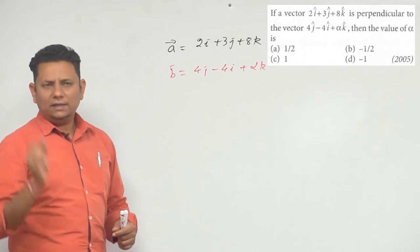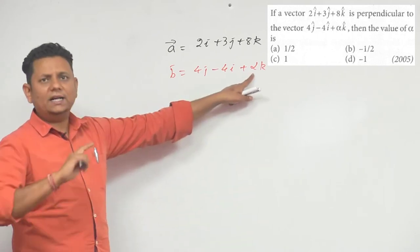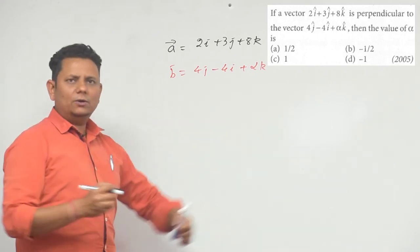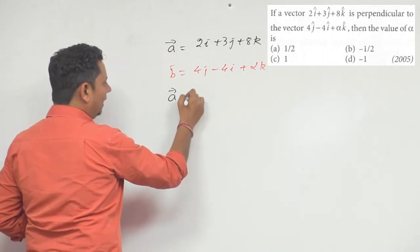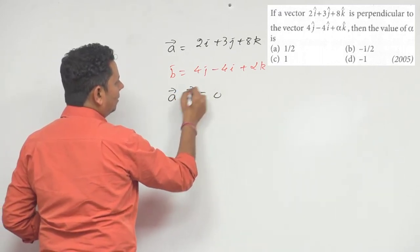need to find the value of alpha such that these two vectors are perpendicular to each other, or we can also say orthogonal. Now you know that if a and b are perpendicular